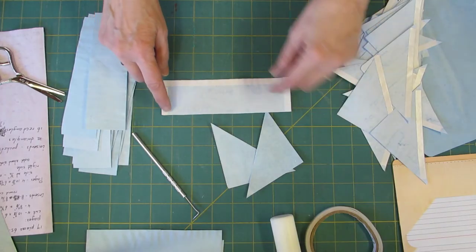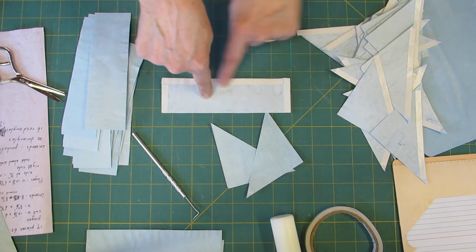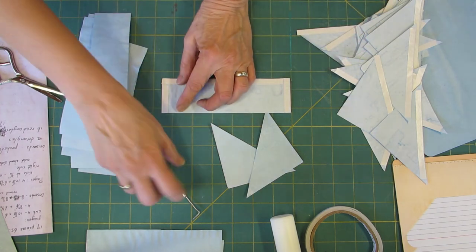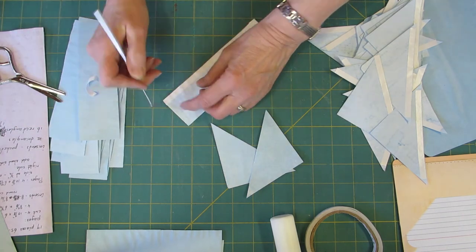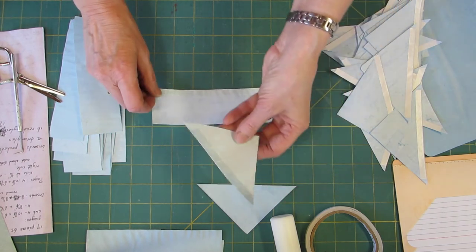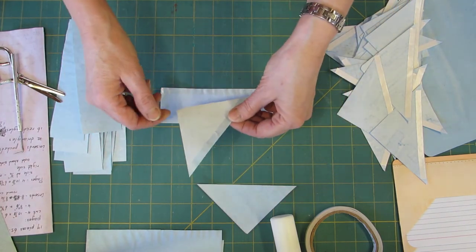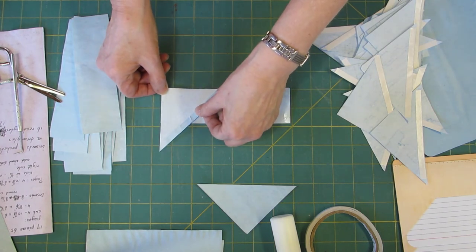Then you're going to apply tape or glue to three sides of the rectangle and take the tape off. Then you're going to grab your triangles. Make sure the triangle is wrong side up and place this in the corner.